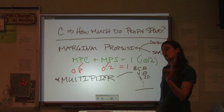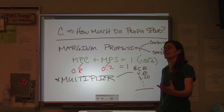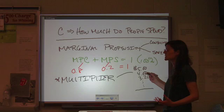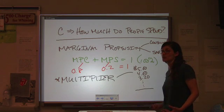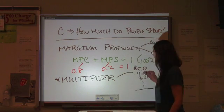If the government has a million dollar tax cut, how much money in terms of total spending after everybody who gets a piece of that spends 80% of it, does that actually turn into? There's a formula for this.